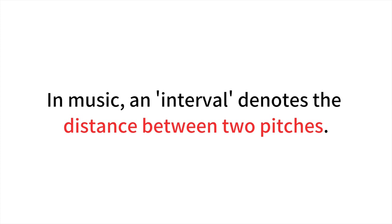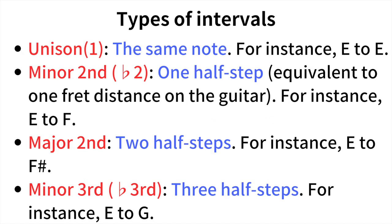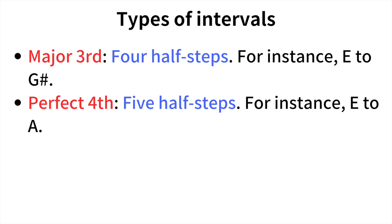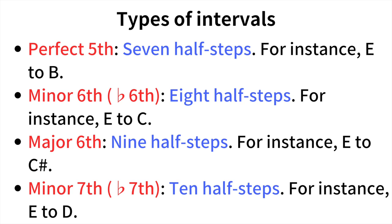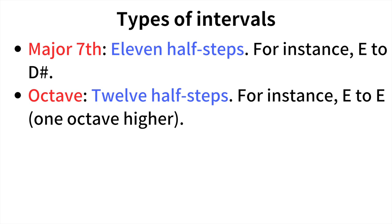Let's delve into the basic intervals: Unison — the same note, e.g. E to E. Minor second — one half step, e.g. E to F. Major second — two half steps, e.g. E to F-sharp. Minor third — three half steps, e.g. E to G. Major third — four half steps, e.g. E to G-sharp. Perfect fourth — five half steps, e.g. E to A. Tritone — six half steps, e.g. E to A-sharp or B-flat; also called augmented fourth, diminished fifth, or sharp fourth/flat fifth. Perfect fifth — seven half steps, e.g. E to B. Minor sixth — eight half steps, e.g. E to C. Major sixth — nine half steps, e.g. E to C-sharp. Minor seventh — ten half steps, e.g. E to D. Major seventh — eleven half steps, e.g. E to D-sharp. Octave — twelve half steps, e.g. E to E one octave higher.